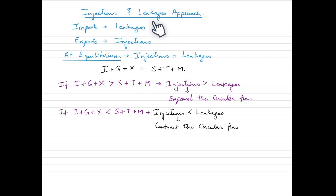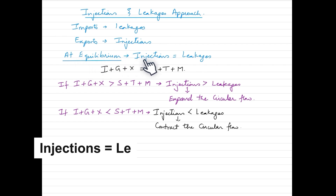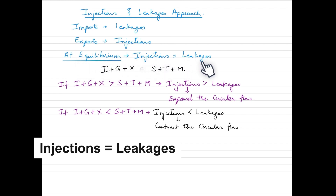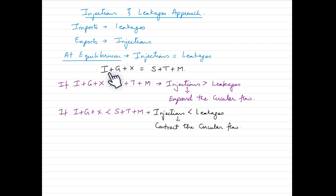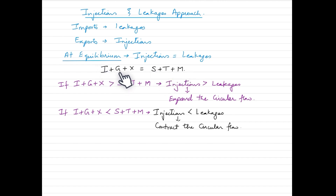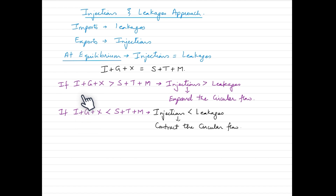The second approach is the injections and leakages approach. In the four-sector model, imports are leakages and exports are injections. At the point of equilibrium, total injections equal total leakages. So we put all injections on one side: I (investment) + G (government spending) + X (exports), and leakages on the other: S (savings) + T (taxes) + M (imports). This gives us the equilibrium condition under the injections and leakages approach.